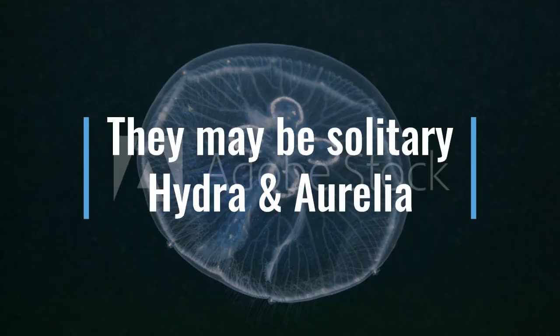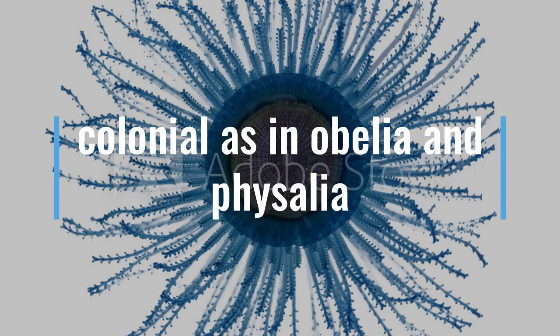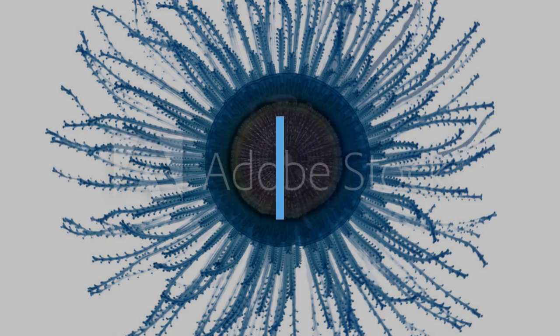Some Cnidarians are solitary and some live in colonies. Hydra and Aurelia are solitary organisms, while Obelia and Physalia are colonial. So we've covered who is freshwater, who is marine, who is solitary, and who is colonial — all these examples are very important.